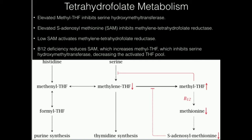Methyltetrahydrofolate is important for the synthesis of methionine from homocysteine. The methyl group on methyltetrahydrofolate is first transferred to B12 and then to homocysteine to make methionine. That methionine is then used to make S-adenosylmethionine, or SAM — the universal methyl group donor.